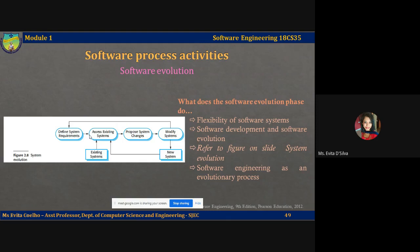Once we have the system requirement in place, rather than developing a software system from scratch, we're going to assess the existing software systems which provide similar functionality. You have a database of existing systems, and you're going to assess these systems and see if there exists a software system that closely matches your requirements. If so, you're going to take that up and propose a few changes to that system in order to make it suitable to your system requirements. Once the proposed changes are in place, you're going to modify the existing system to create a new system.